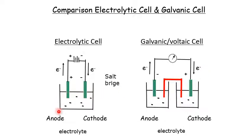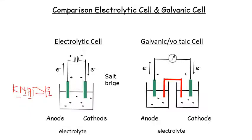Use the mnemonic CANNAPE for electrolytic cell: Cathode Negative, Anode Positive. For the galvanic cell, use KEPANG: Cathode Positive, Anode Negative. These mnemonics help you remember the terminal polarity for each type of cell. Please refer to my previous video if you need a reminder.